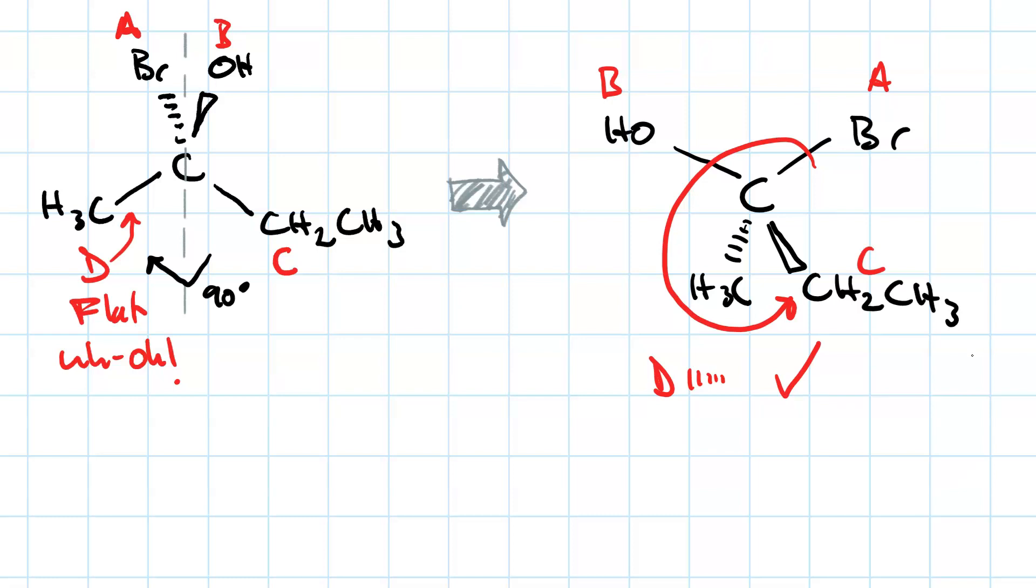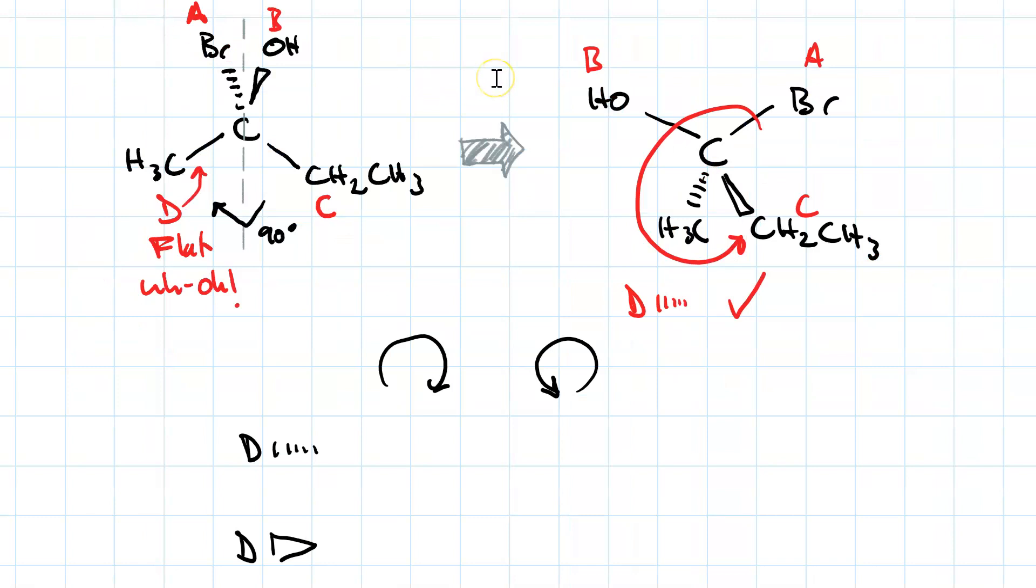So let's make a little table. And once you've done this and prioritized your molecule and drawn your curved arrow, there are a total of four possibilities. If your lowest priority group is on a dash, so I've got D on a dash here, and your curved arrow goes counterclockwise, as we've shown here, then that chirality center is designated S.